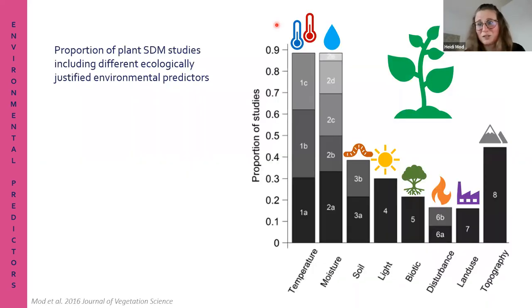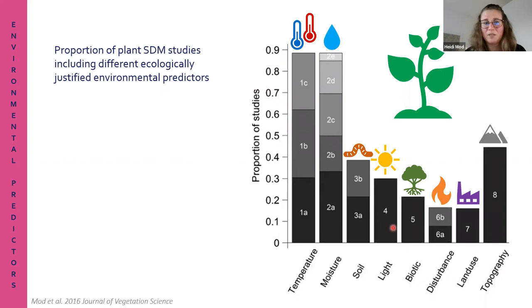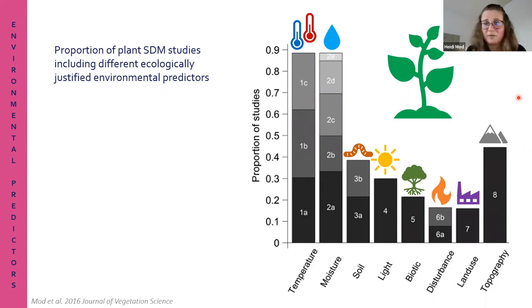Here is a quantitative literature review where we identified all plant SDM studies published by 2015 and checked what variables were being used. We found that yes, most of them include temperature and moisture, but soil and light variables - which we know affect plants - were way underrepresented. Biotic interactions, disturbances, and land use were very rarely used. Topography was quite common, but topography is not a direct driver - it indirectly affects temperature, precipitation, and soil properties.